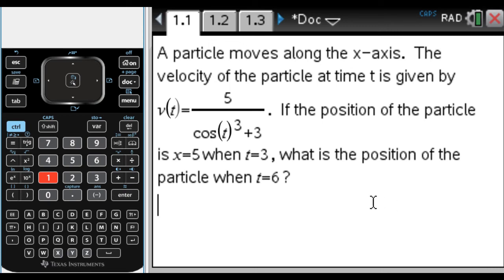In this video we're going to solve this problem. We have a particle that moves along the x-axis. The velocity of the particle at time t is given by v(t) = 5/(cos³(t) + 3). If the position of the particle is x = 5 when t = 3, what is the position of the particle when t = 6?